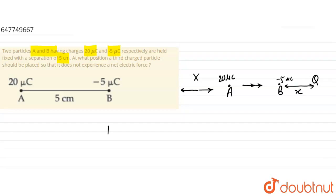The 20 microcoulomb force is: 1 by 4 pi epsilon 0, times 20 times 10 to the power minus 6, times charge Q, upon R squared. What is the distance from 20 microcoulombs? x plus 5 cm, which is 5 into 10 to the power minus 2, all squared.